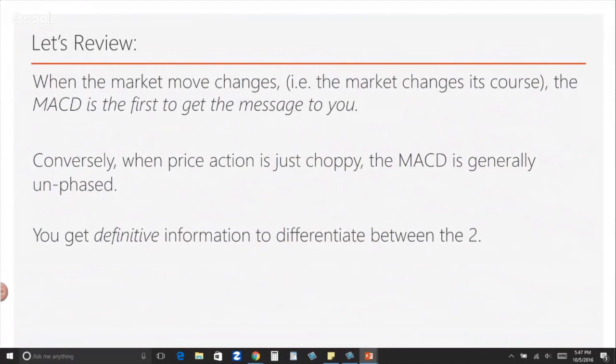When the market changes its course — has a reversal, does something new — the MACD is the first to get the message to you. Conversely, when price action is just choppy — it looks like it's really starting to move but it's actually just choppy — the MACD is generally unfazed by that. It's very steadying when the MACD holds its position even when price doesn't, so you get definitive information to differentiate between the two: is the market making a new move, or is it just getting choppy?